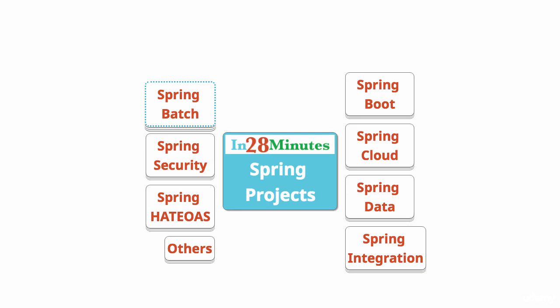Not all processing is done online. Some processing is also done in batch applications, which have their own requirements. For example, you would want to be able to restart a failed job from where it failed, or track exactly what's happening in a batch in much more minute detail. Spring Batch provides those kinds of features and enables developing batch applications very easily.